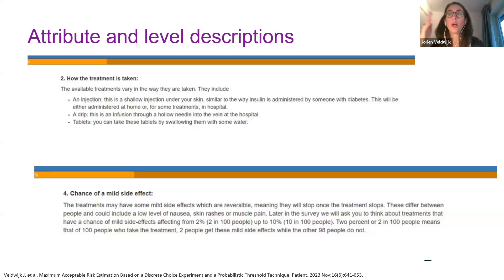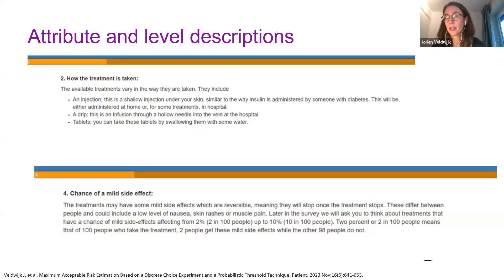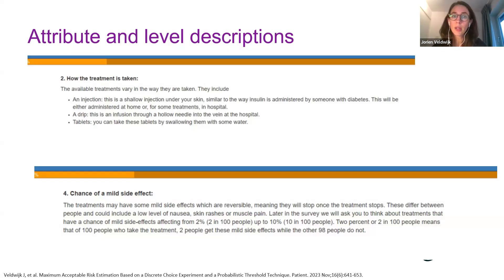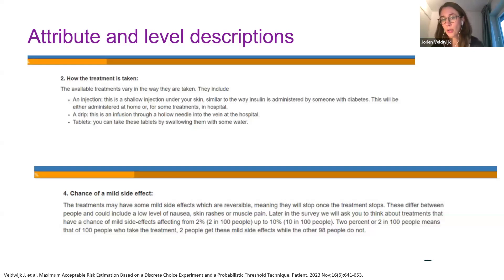While all attributes need to be explained, not all levels of all attributes need to be explained in detail. For categorical attributes like mode of administration, all levels need to be mentioned and explained because they have different meanings — having an injection is something really different from getting a drip or taking a tablet. However, when we have continuous attributes on a ratio scale, like risks, explaining one of those levels in detail might be considered enough for the majority of respondents.